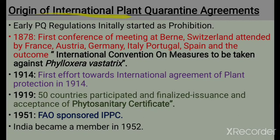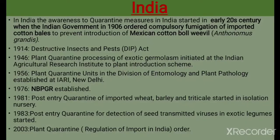Now we will talk about the origin of international plant quarantine agreements. Early plant quarantine regulations initially started as prohibitions. In 1878, the first conference meeting at Berne, Switzerland, attended by France, Austria, Germany, Italy, Portugal, and Spain, resulted in the first international convention on measures to be taken against Phylloxera vastatrix. In 1914, the first effort toward an international agreement on plant protection took place. In 1919, 50 countries participated and finalized issuance and acceptance of phytosanitary certificates. In 1951, FAO sponsored the IPPC, and India became a member in 1952.